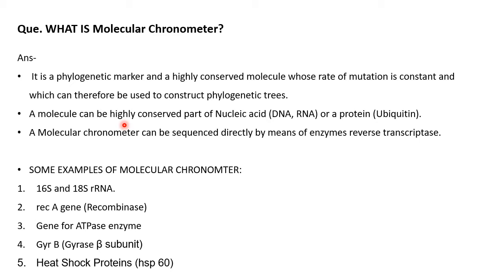Some examples of molecular chronometers are 16s rRNA, 18s rRNA, the RecA gene (recombinase gene), the gene for ATPase enzyme, gyrase beta subunit, and heat shock proteins. These are molecular chronometers which are highly conserved and can be used to construct phylogenetic trees.